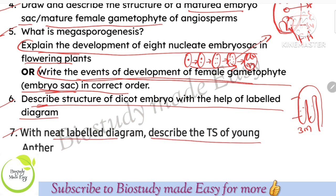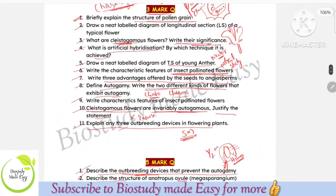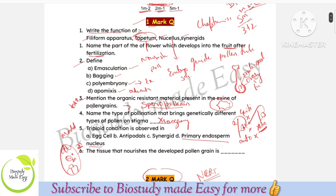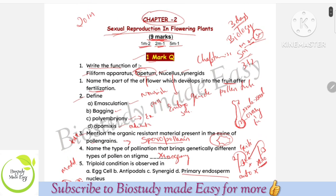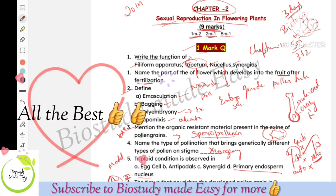With a neat labeled diagram, describe the TS of a young anther. Draw the microsporangium diagram. Well students, these are all the questions that will come from this chapter. This chapter is very very important — you can get 5 marks from it. There is a separate video on 5-mark questions for this chapter, so watch that too. Use all available sources. Don't waste time — start working. All the best. Thank you.